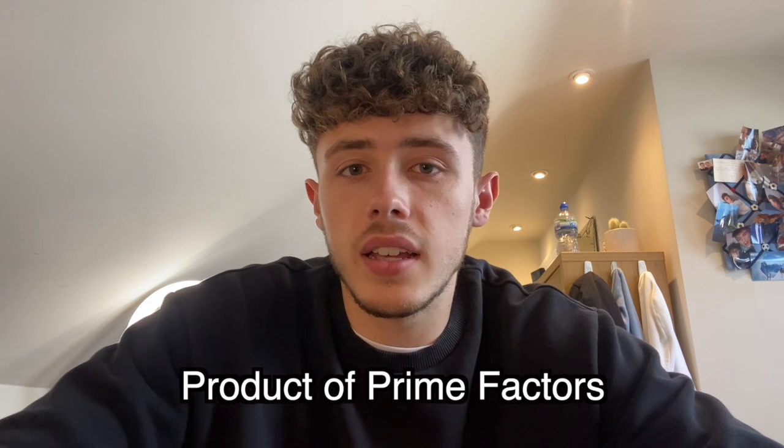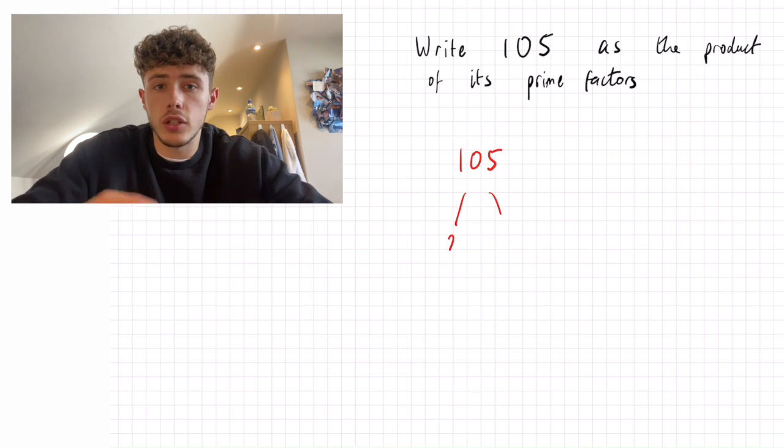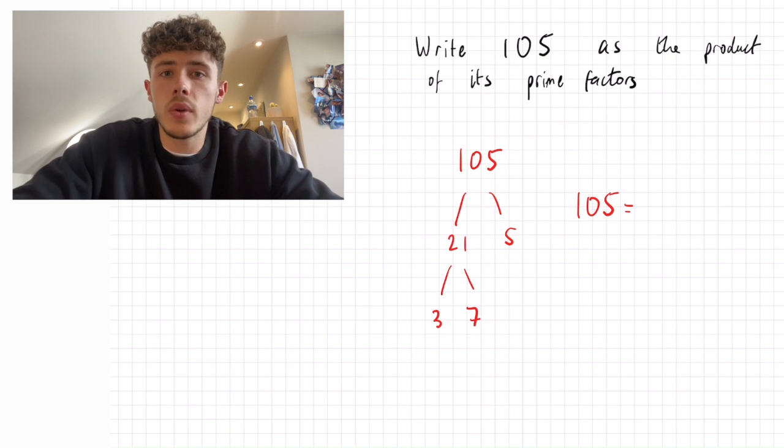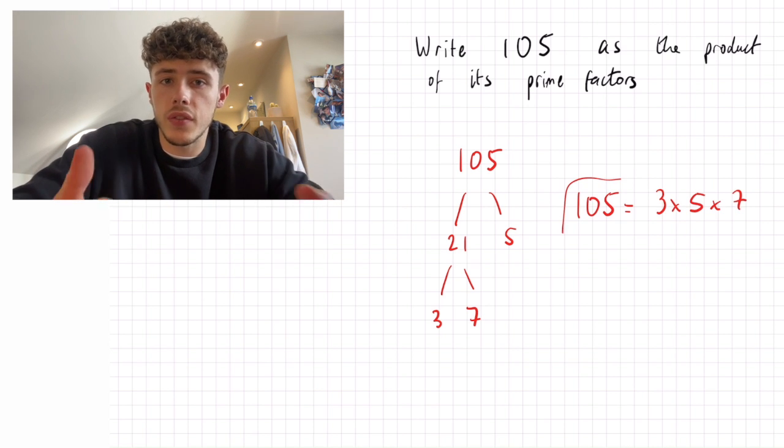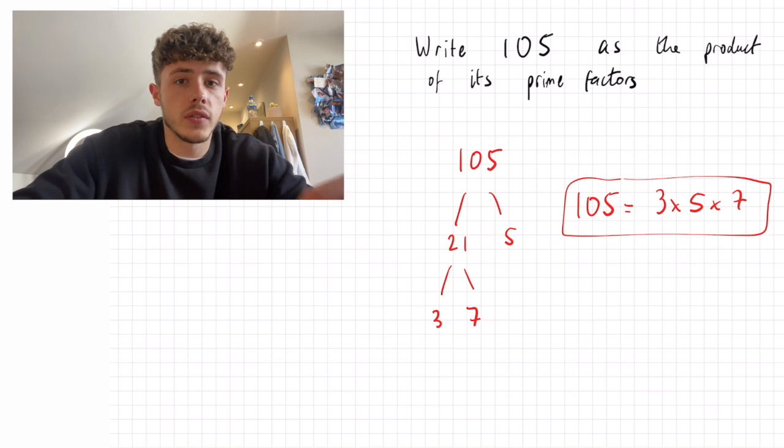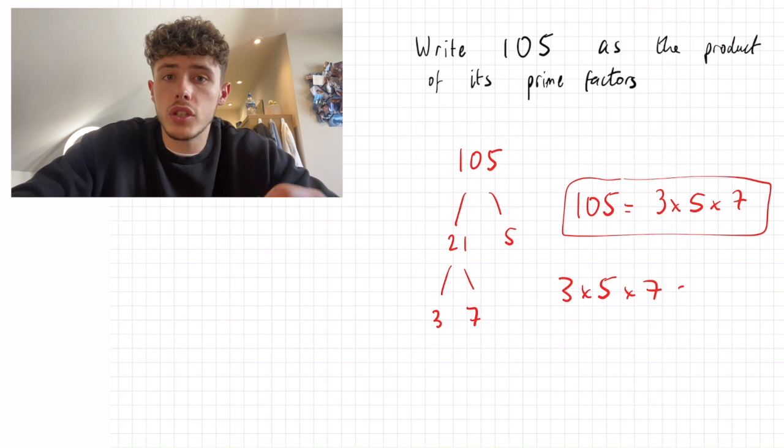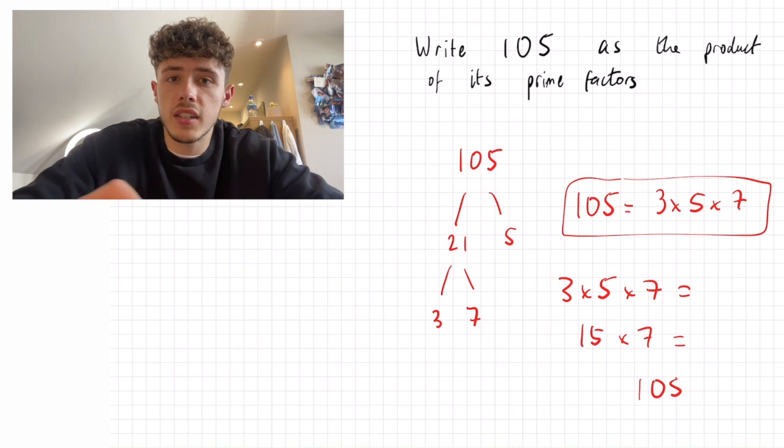And finally the last place we can use this is when we're calculating the product of prime factors of any number. So the product of prime factors is when you write a number like this and you do your prime factor trees or if you saw my last video you can do it on the calculator. But let's say we have the number 105. If we did our factor tree for this it would look a bit like this so we'd have 3 times 5 times 7. Now just to make sure you've done the calculations correctly when you have done your prime factor tree, it's always worth just double checking that 3 times 5 times 7 does in fact make 105.